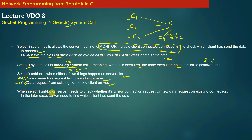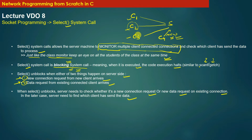When the select system call unblocks, the server needs to check whether it is a new connection request or a new data request on an existing connection. In the latter case, the server needs to find which client sent the data, because the server could have unblocked because client C2 or client C3 sent data. So when server S unblocks, it must identify which client caused the unblocking.